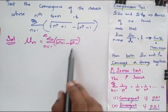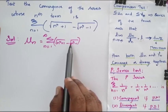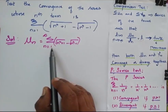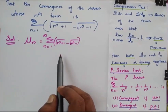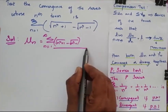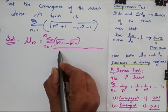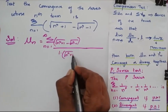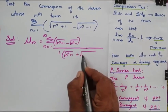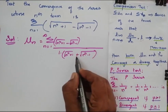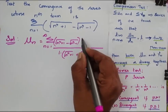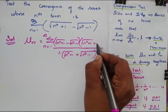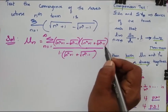I need to simplify this by multiplying by the conjugate. I am going to multiply both numerator and denominator by the conjugate, which is square root of n power 4 plus 1 plus square root of n power 4 minus 1, with denominator 1. The numerator is also multiplied by square root of n power 4 plus 1 plus square root of n power 4 minus 1.